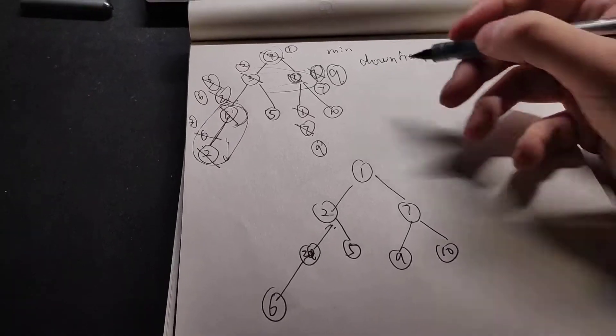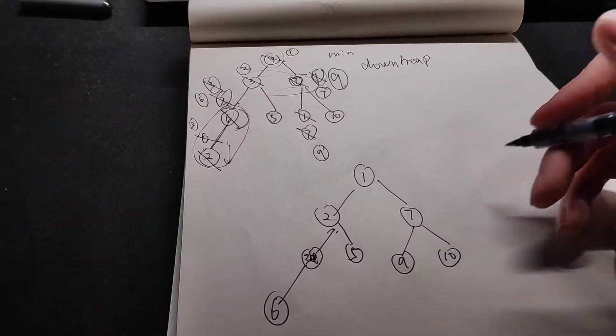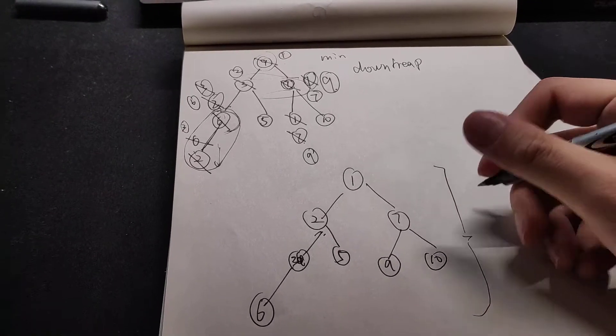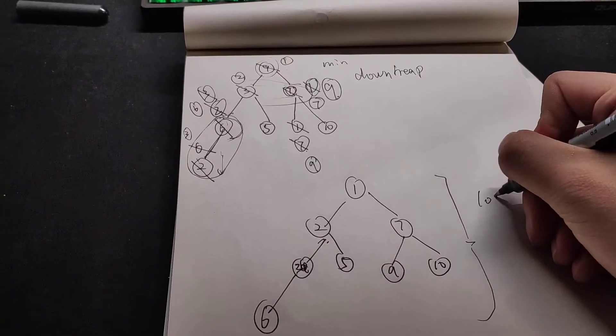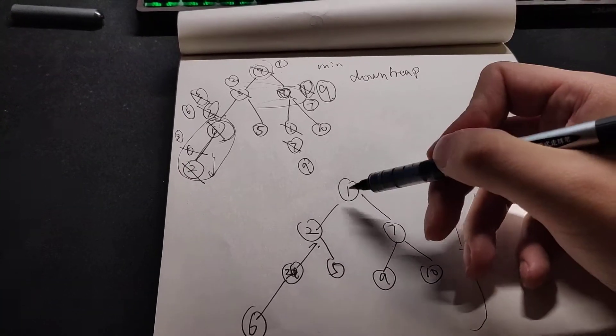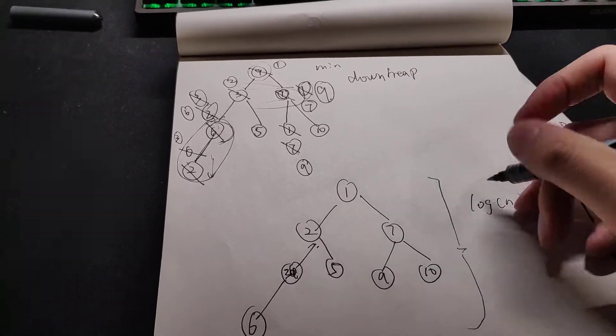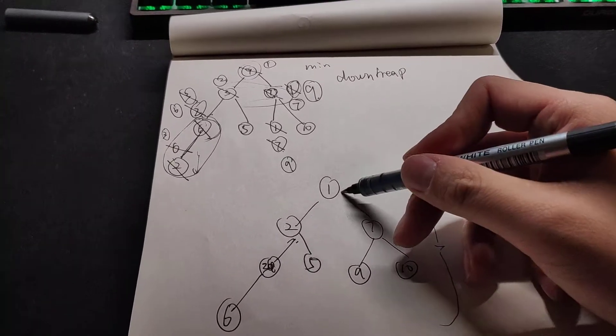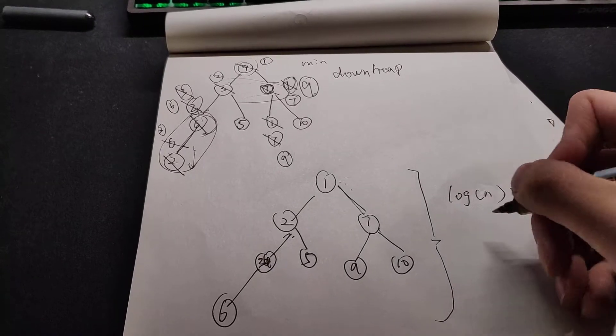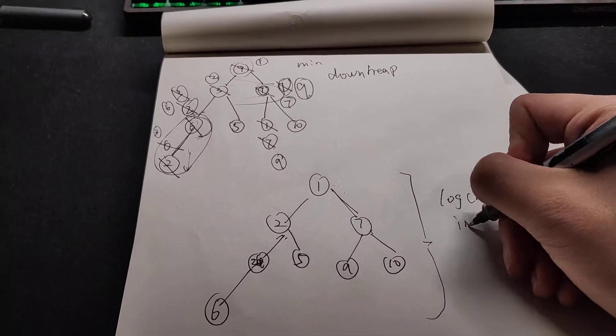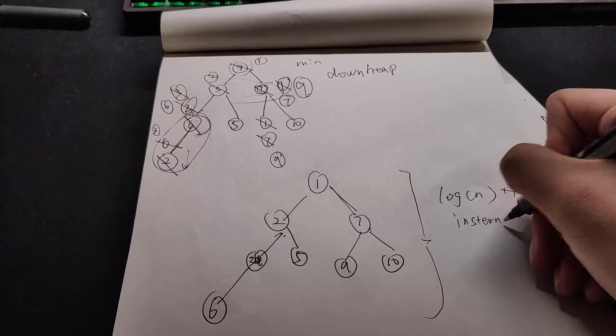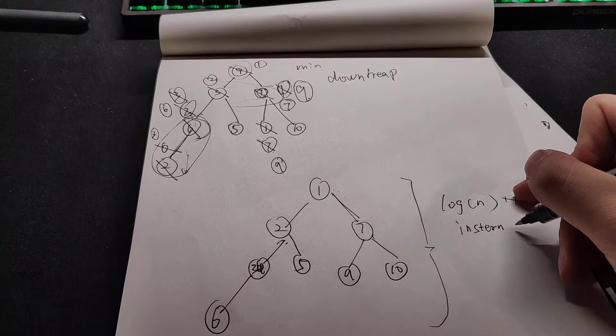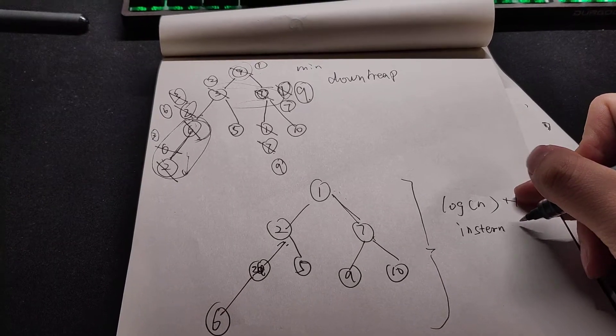And for the insert and the deletion, because the level of this one should be log n. So it should be log n plus one. Then when we do it, we will go to the last level. So for the insert, it fell from the first one to the last one. So it should be log n.